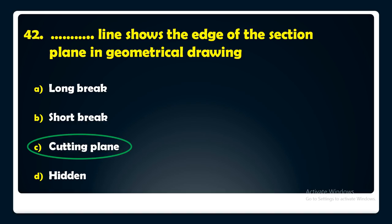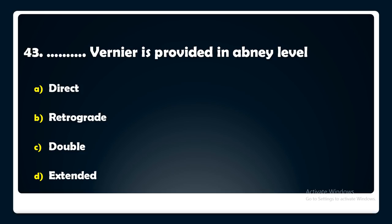Which type of vernier is provided in an Abney level — direct, retrograde, double, or extended? The answer is: an extended vernier is provided in an Abney level.